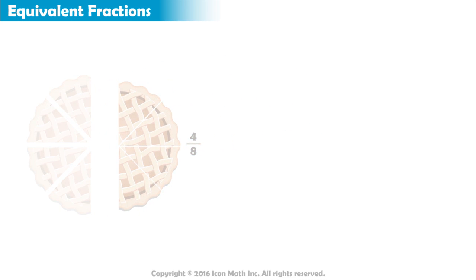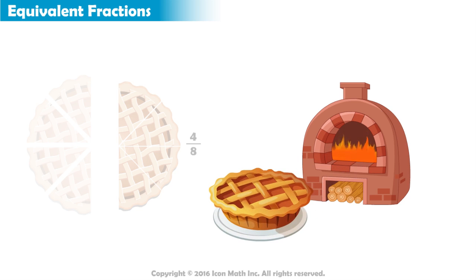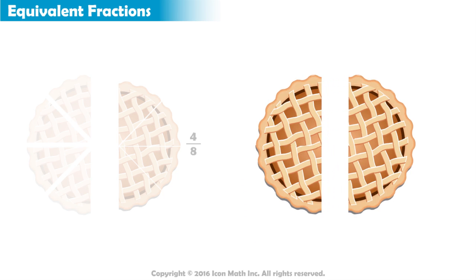Let us put this pie as it is on one side. And now bring in a new whole apple pie fresh from the oven that is the same size as the first pie. Say we want to divide this new pie into two equal parts. What fraction represents each part? That's right, one half.